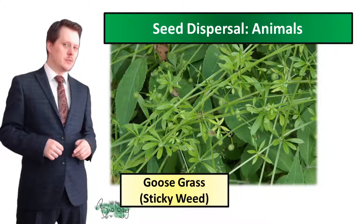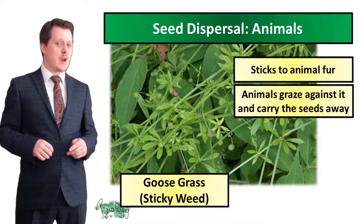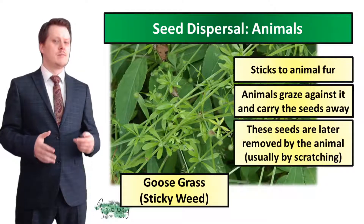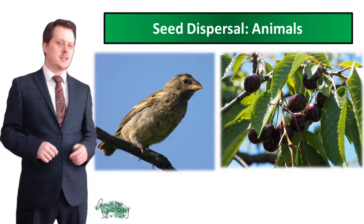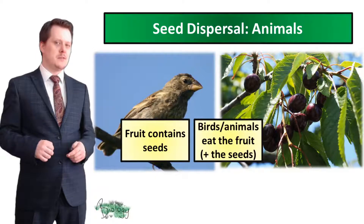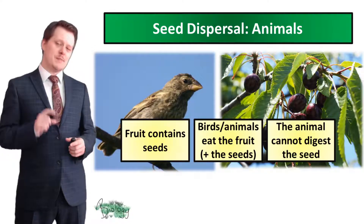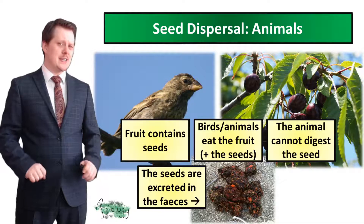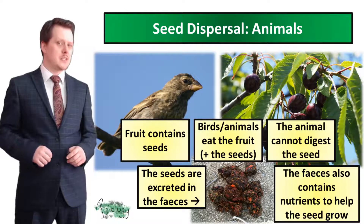Seeds can also be dispersed by animals in two ways. Some seeds can stick to animal fur, so when animals have grazed against the plant they will carry the seeds away. These seeds are later removed by the animal, usually by scratching or grazing against something else. Animals can disperse seeds in another way too — when birds or animals eat the fruit they often eat the seeds as well. The animal cannot digest the seed because it has a protective coating, so the seeds are excreted in the feces. This not only disperses the seed but the feces also contains nutrients to help our seed to grow.